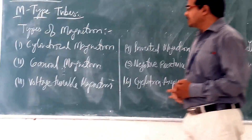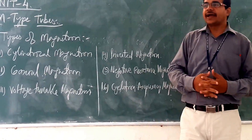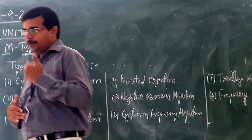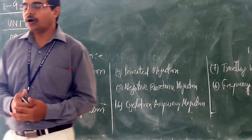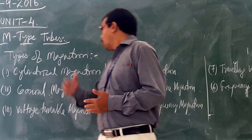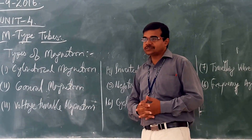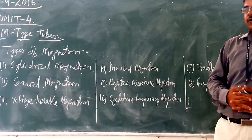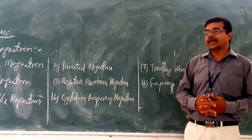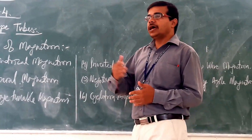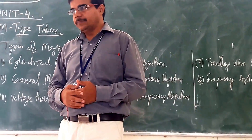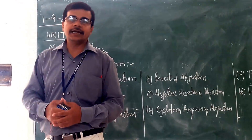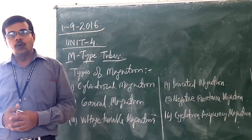Today's topic is types of magnetron. Magnetron is one type of M-type tubes, and it is also another category of cross-field tubes. In the magnetron, the electric field and magnetic field are perpendicular to one another. On the other hand, in O-type tubes, the electric field and magnetic field are parallel to one another.